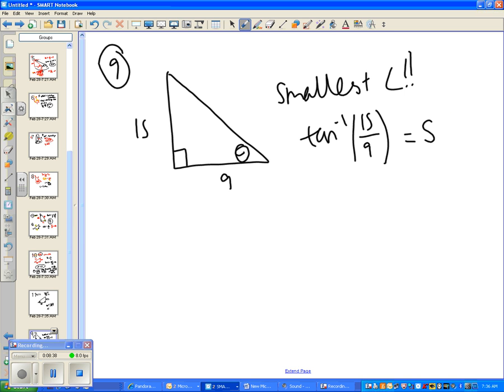And so some people, if you put 59 degrees, you were super close, but go back, they wanted the smallest angle. So if this one's 59 degrees, we can figure out that this angle has to be 31 degrees because all angles add up to be 180 degrees. So your answer should have been 31 degrees.